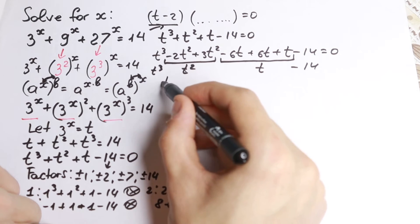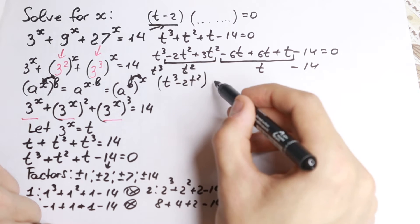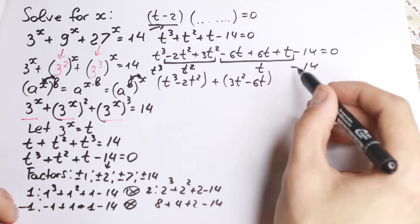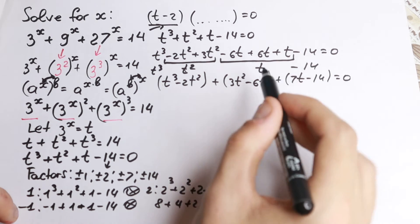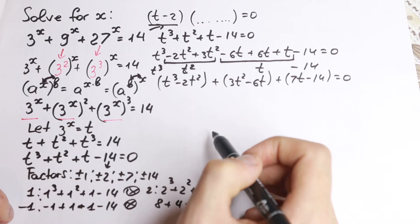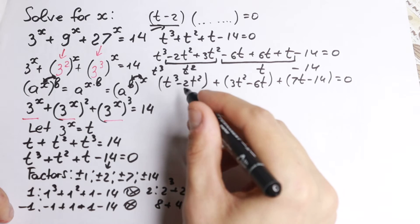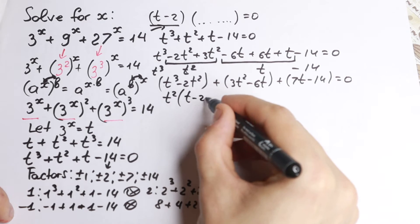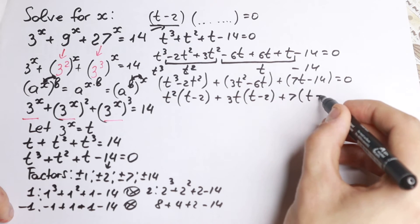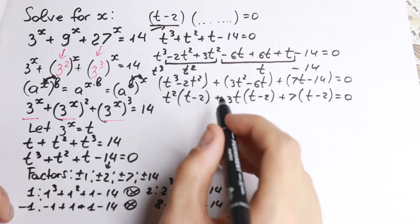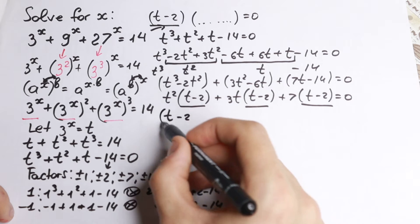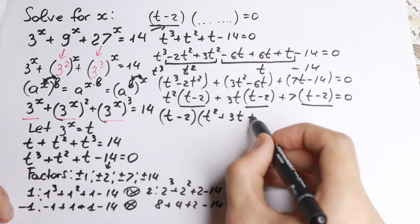Now I group these elements in pairs: the first group is t cubed minus 2t squared, the second is 3t squared minus 6t, and the third is 7t minus 14. Factoring each group: from the first, factor t squared to get t squared times (t minus 2); from the second, factor 3t to get 3t times (t minus 2); and from the third, factor 7 to get 7 times (t minus 2). So we can factor out t minus 2, giving us (t minus 2)(t squared plus 3t plus 7) equals 0.